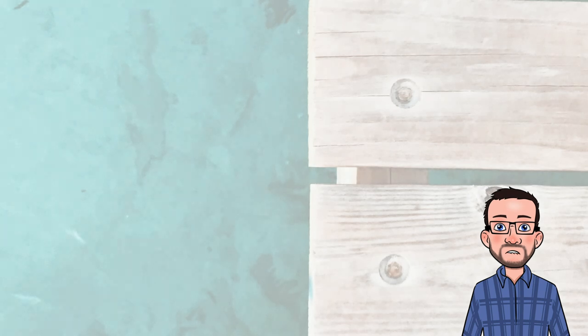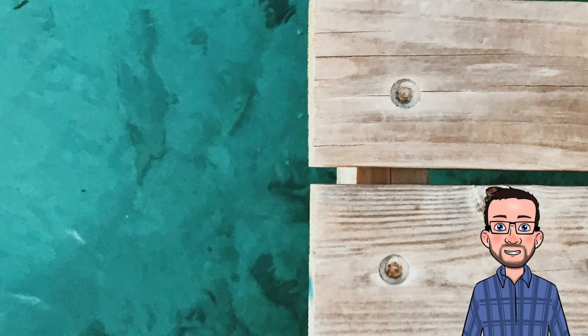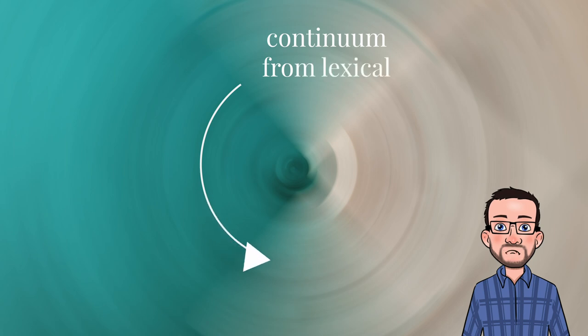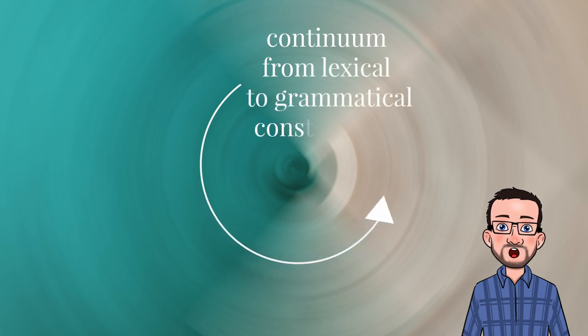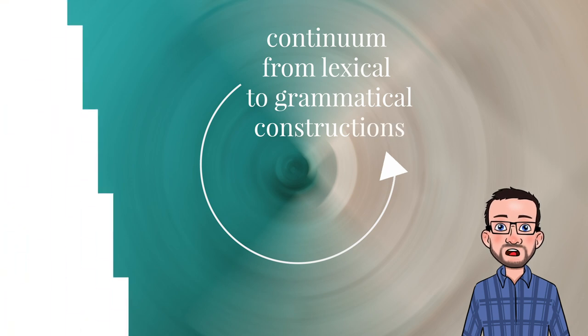In construction grammar, as we've seen in previous lectures, we do not make a sharp distinction between a dictionary on one hand and rules for combining words on the other. So Goldberg argued that instead of having an abstract set of rules, there are grammatical constructions that are very similar to lexical items in the sense that they are also conventional mappings between meaning and form. She called these constructions argument structure constructions.